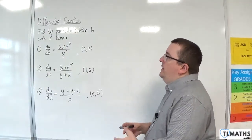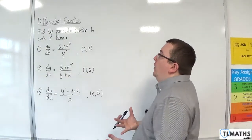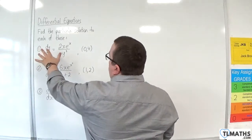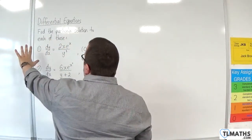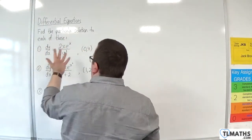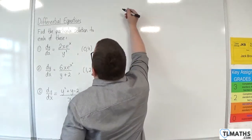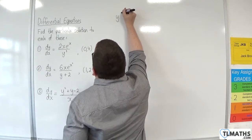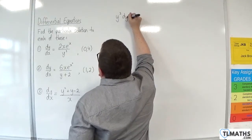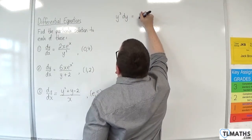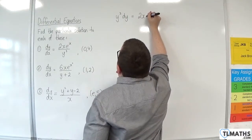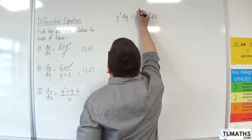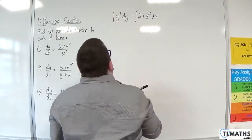So I need to separate the variables. I'm going to multiply both sides by y cubed to get all the y's onto the left-hand side, and multiply by dx to get all the x's on the right-hand side. So I should get y cubed dy is equal to 2x e to the x dx, and then I put in my integral signs.